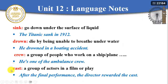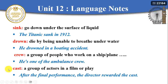The word 'cast' means a group of actors in a film or a play. So we have crew, cast, and staff: crew works on a ship or plane; cast are actors in a film or play. For example: 'After the final performance, the director rewarded the cast.' And 'staff' is a group of people who work for an organization — like teachers working in an education company. For example: 'There is a good relationship between the pupils and the staff.'